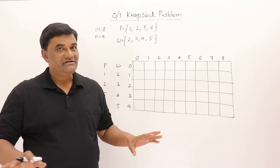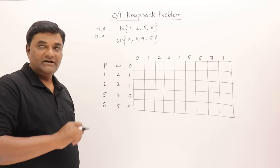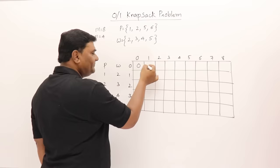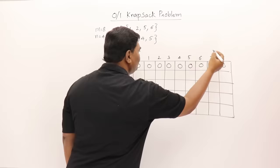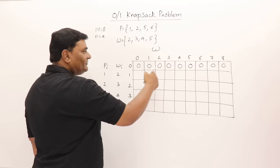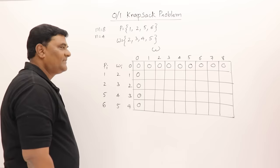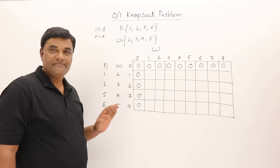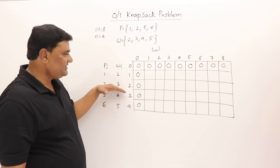For filling this table we have a formula, which I will show after filling some values. For the first row, zero objects are included, so the profit in all cells is 0. When capacity is 0, profit is 0. Now I will start filling. For the first object, the weight is 2, so it can only be placed when bag capacity is at least 2. The profit is 1, so fill 1 there.